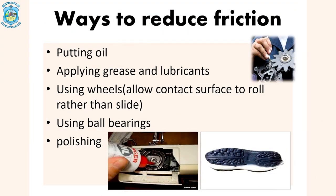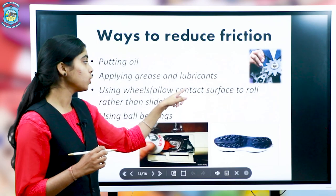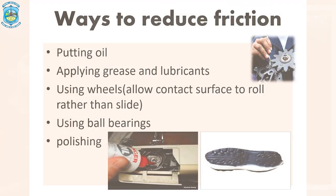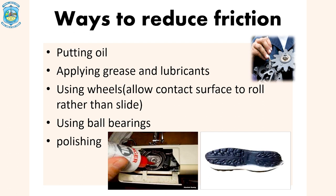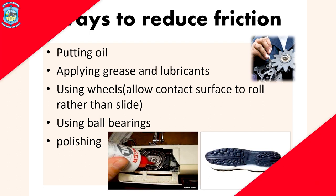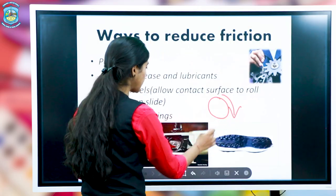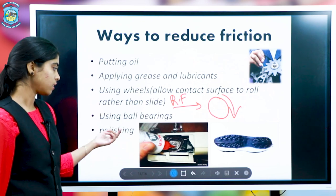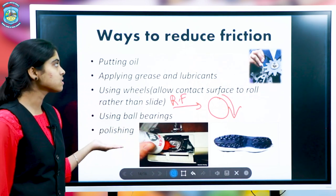Ways to reduce friction: putting oil, because oil makes the surface smooth for sliding. Applying grease and lubricants for the same reason. Using wheels — for example, a car with square wheels would not be able to move, which is why wheels are circular. Using ball bearings, whose outer surface is smooth, reduces friction. Polishing also smooths the surface, and the smoother the surface, the less will be the friction.